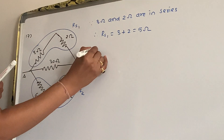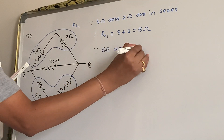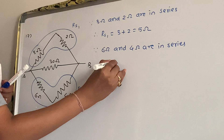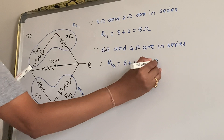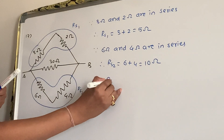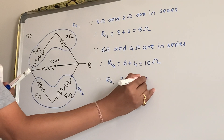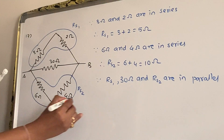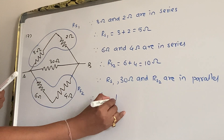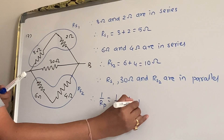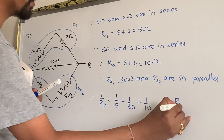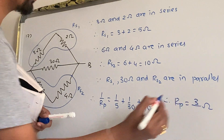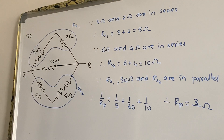Now Rs1, 30 ohm, and Rs2 are in parallel. So 1/Rp = 1/5 + 1/30 + 1/10. That comes out to Rp = 3 ohm. That is the answer for question 17.